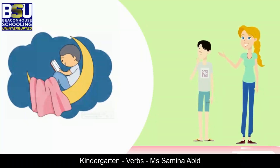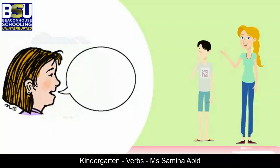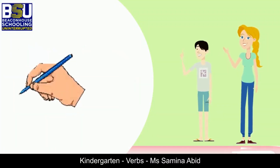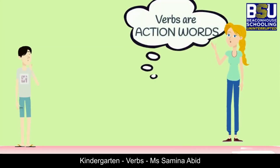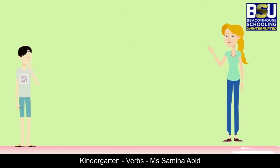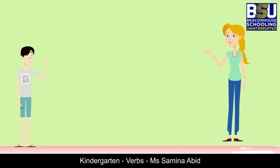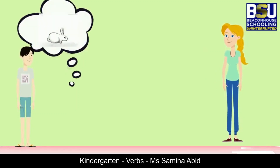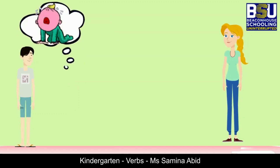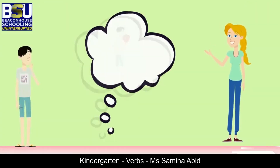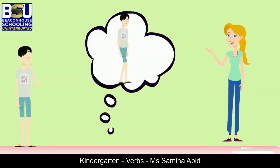Verbs are everywhere. When you sleep, when you speak or you write, you are performing an action. Verbs are action words. Often these actions are physical movements that you can see or sometimes hear. For example, it is easy to see a ball bounce or a bunny hop. You can hear a person sing or a baby cry. When you eat, sleep or walk, you are performing an action.